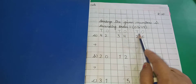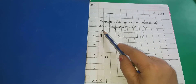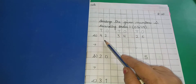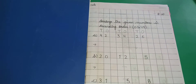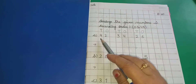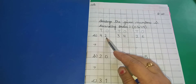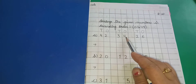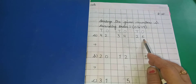इनसे आपकी help कैसे होगी? आप compare करेंगे कि tens के place पे क्या number given है, then आप उनको easily arrange कर सकेंगे. So let's start. First of all, read the numbers loudly with me: 4, 2 — 42. 3, 4 — 34. 2, 6 — 26.